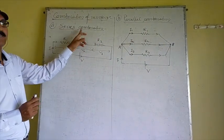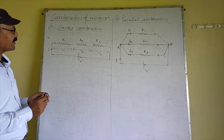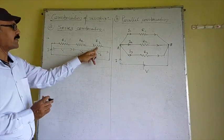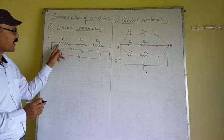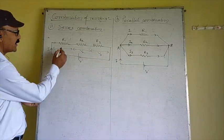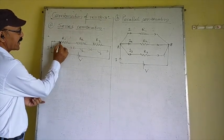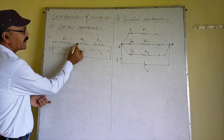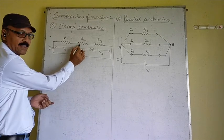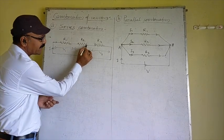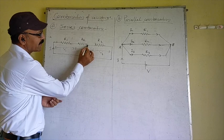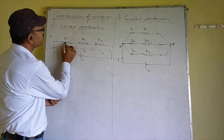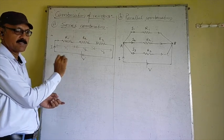First, we discuss the Series Combination. Look at R1, R2, R3 — three resistances are connected in series. The second end of the first resistance R1 is connected with the first end of the second resistance, and the second end of the second resistance is connected with the first end of the third resistance. These are called the Series Combination.